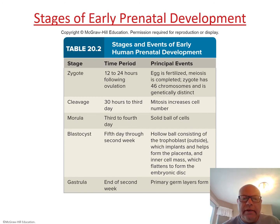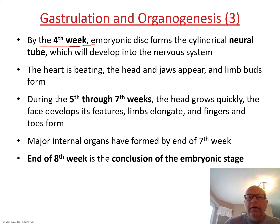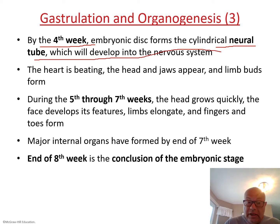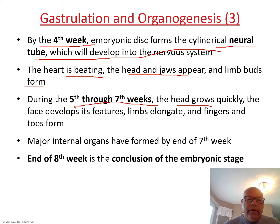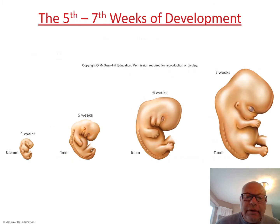By the first month, the embryonic disc forms a neural tube, giving rise to the nervous system. The heart is beating at this stage, the head and jaws are appearing, and limb buds are forming. During weeks five through seven, the head grows quickly, facial features appear, limbs elongate, and fingers and toes become visible. By the end of week seven, major internal organs have formed, and by the end of the eighth week we move into the fetal stage.